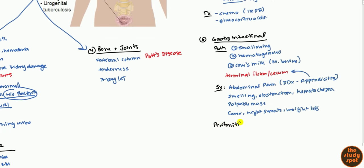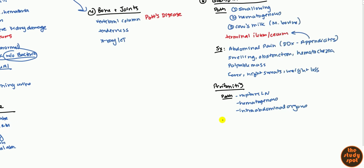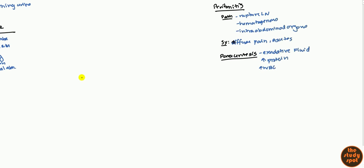Peritonitis can also occur. How does it get there? A ruptured lymph node oftentimes can rupture into the peritoneum. It can go hematogenous route. And of course, it can go from direct extension from an intra-abdominal organ. Symptoms: they generally have diffuse pain and it can lead to ascites because of the inflammation. Paracentesis, again, you see an exudative, high-protein type of fluid. And you would expect to have high white blood cell count.